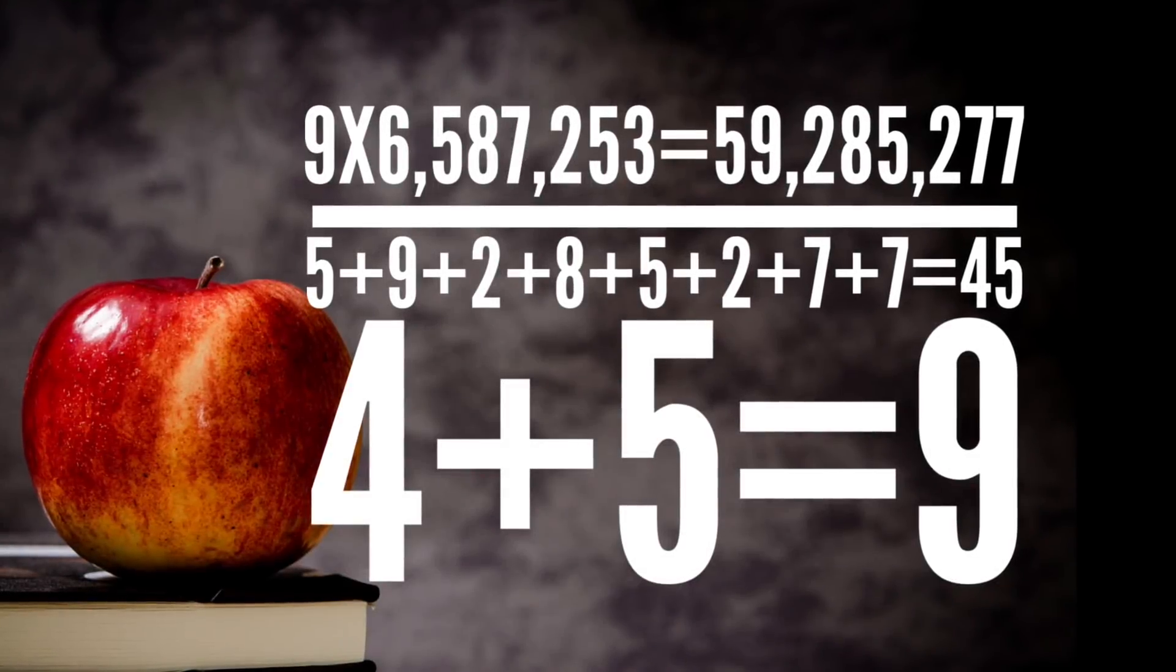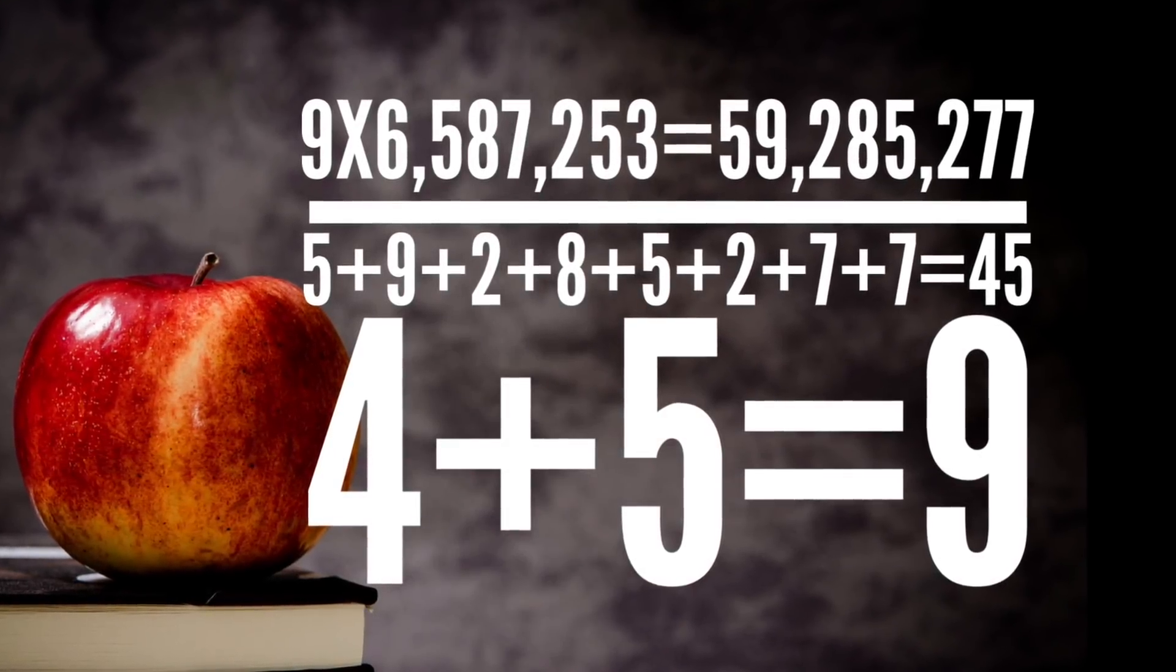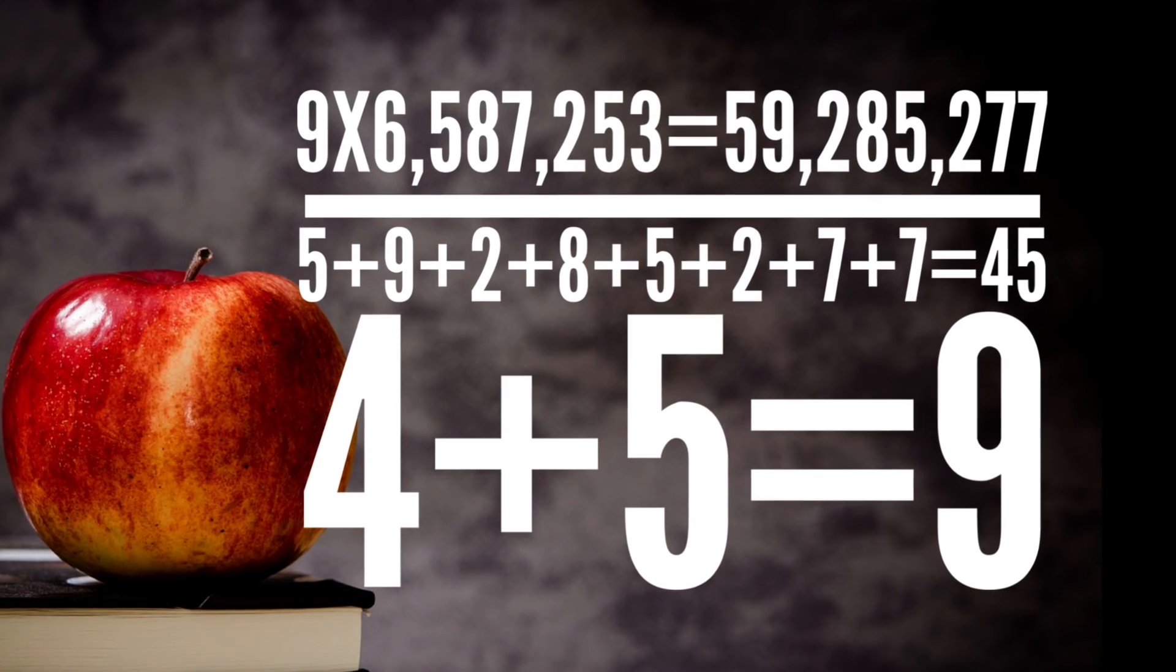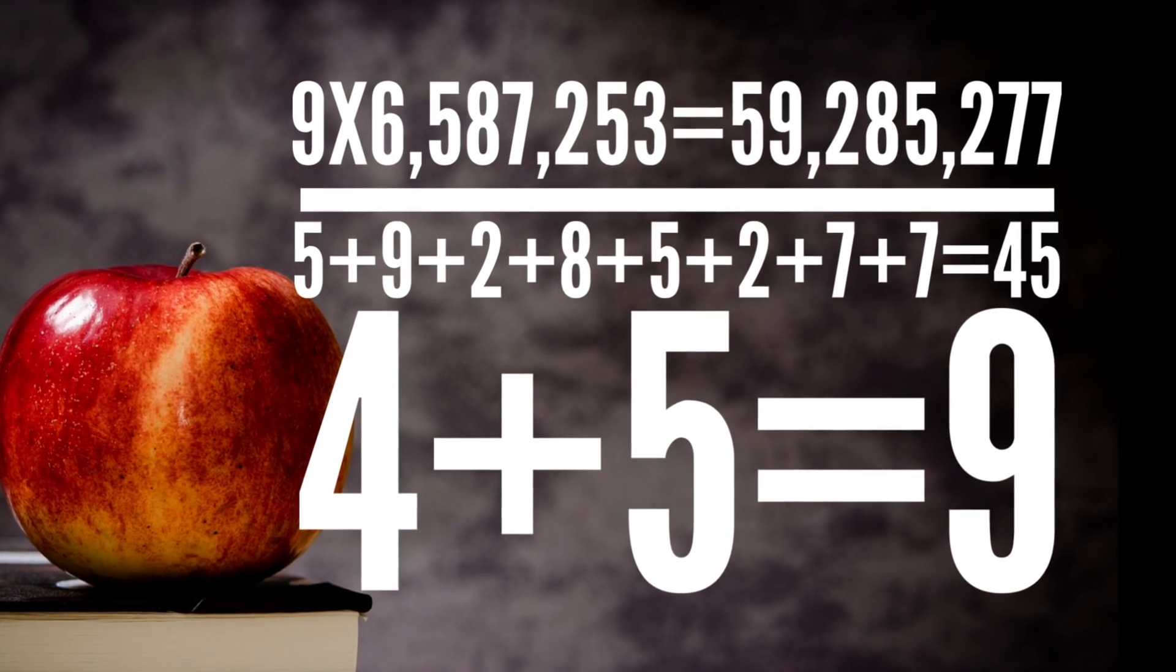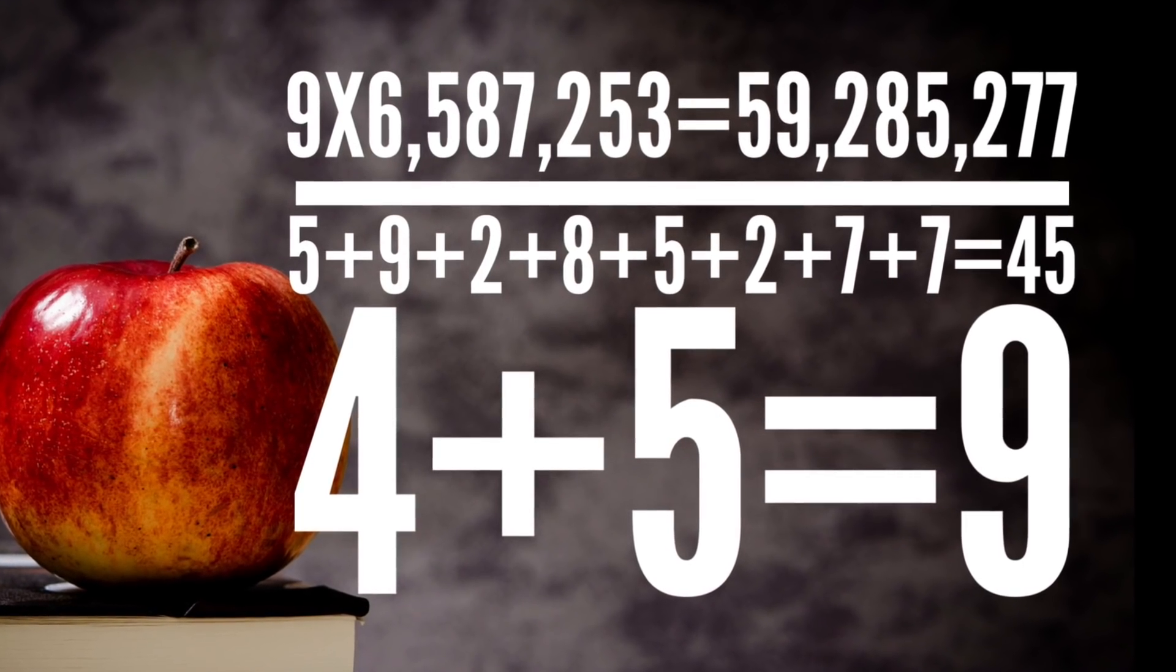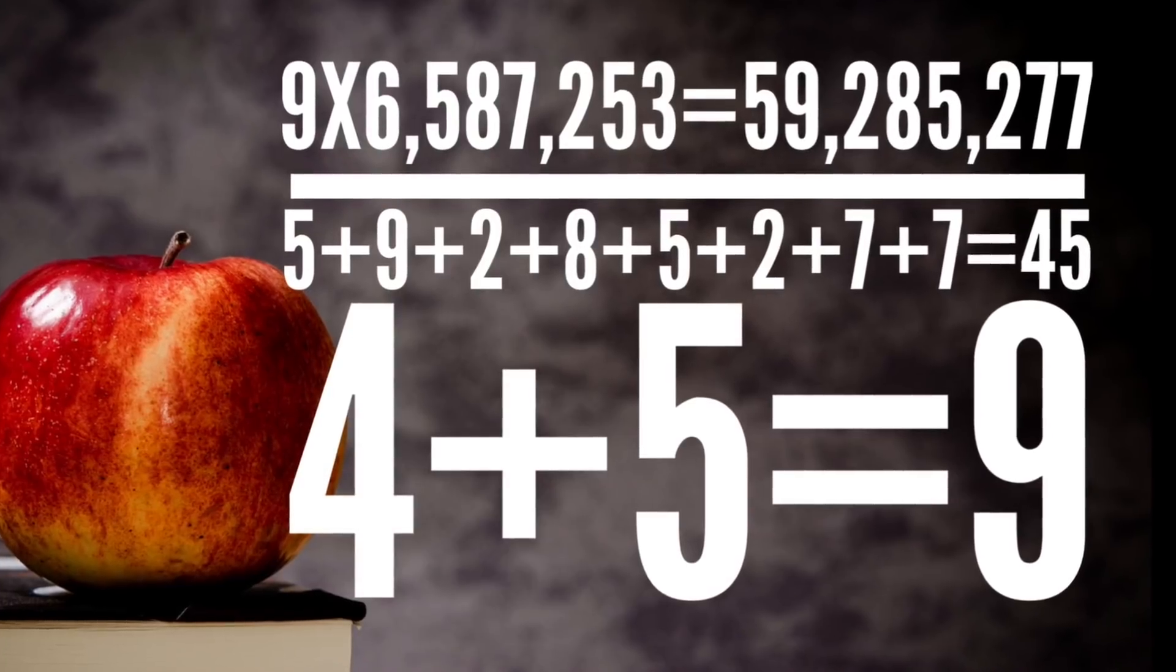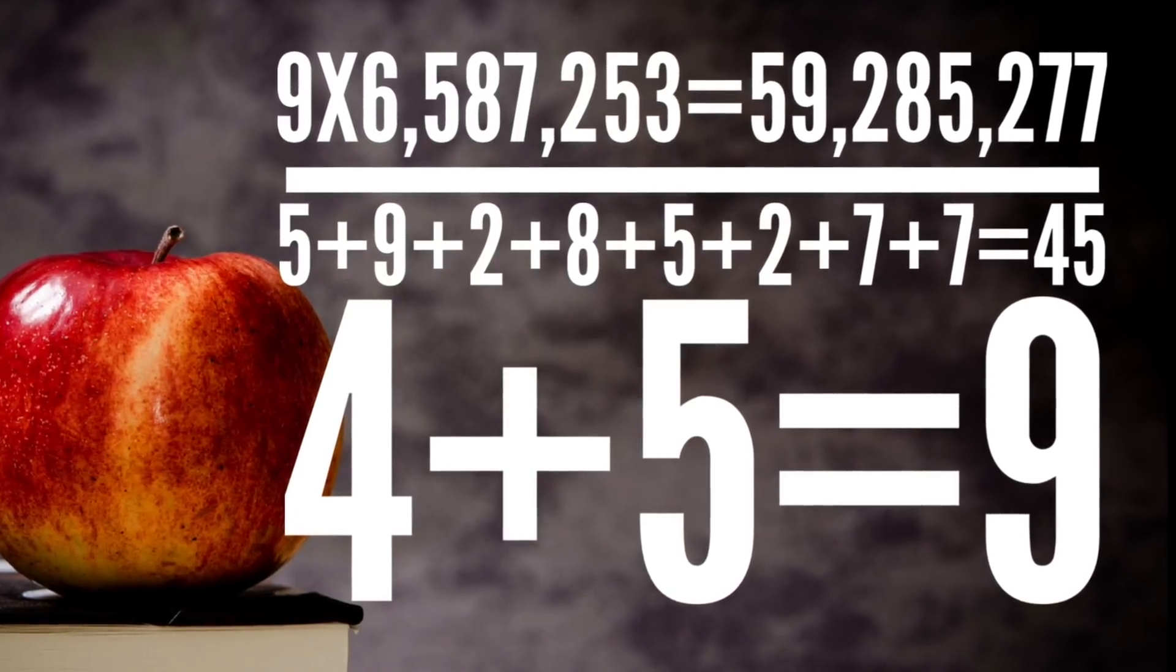Okay, 9 times 6,587,253 equals 59,285,277. 5 plus 9 plus 2 plus 8 plus 5 plus 2 plus 7 plus 7 equals 45. And 4 plus 5 equals 9.